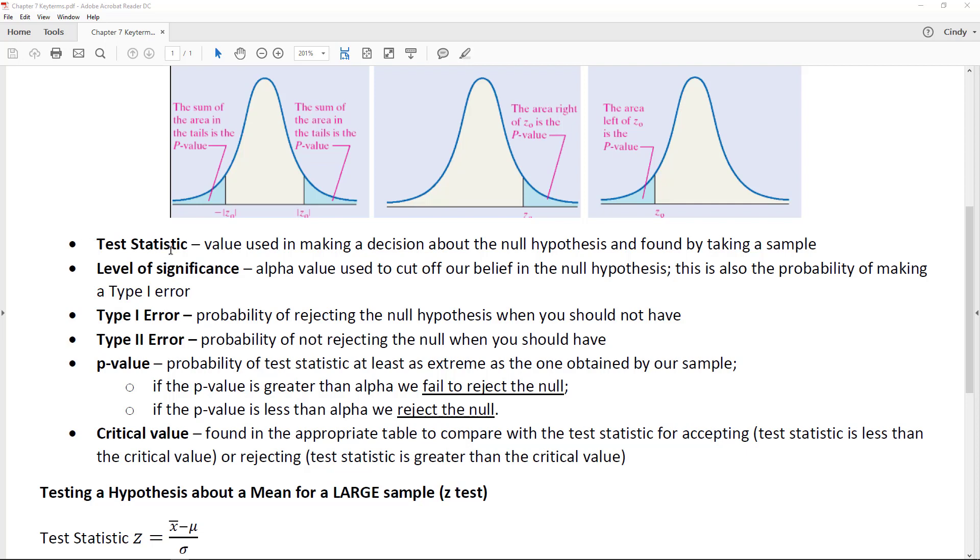Typically when you find the test statistic, you like to know what's the probability—if what they're telling me is true, would I expect to get that? That's what's called a p-value, and a lot of times we like p-values to compare with our alpha